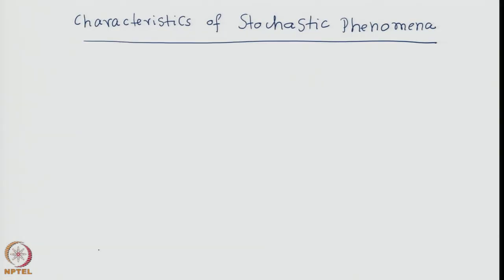Before doing that, let us consolidate our understanding of what constitutes a stochastic process. Generally, a stochastic process is characterized by a few key ideas. One is, of course, the random variable, which is common to any statistical experiment.